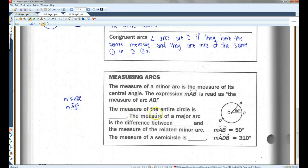The measure of the entire circle is, as we mentioned before, 360 degrees. The measure of a major arc is the difference between 360 degrees and the measure of the related minor arc. The measure of a semicircle is always going to be 180 degrees.